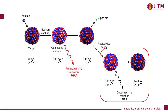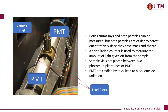Following beta decay, the excited nucleus emits gamma rays to reach its ground state. Both gamma rays and beta particles can be measured, but beta particles are easier to detect quantitatively since they have mass and charge. A scintillation counter is used to measure the amount of light given off from the sample.